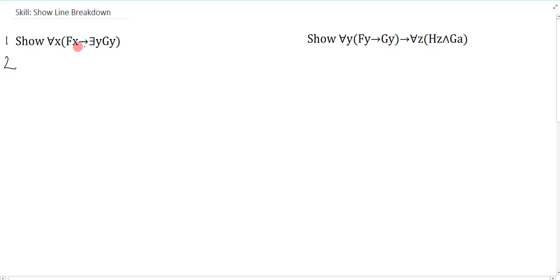So whenever you have a show of a universal, we immediately just need to show that this property here holds for an arbitrary member, which we're going to pin down to be the same thing here. So that really simply just boils down to showing an instantiation, and it looks like this. So if I can successfully show that for some arbitrary x, if Fx then there exists a yGy, then I can actually conclude that everything has this property because x was arbitrary.